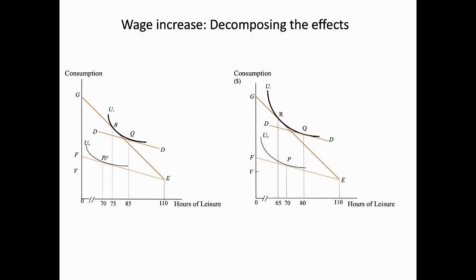Now, when there is a change in the wage rate we need to take into account the income and substitution effects. To capture the income effect, we need to draw a parallel line to the original budget constraint EF until it touches the new indifference curve.